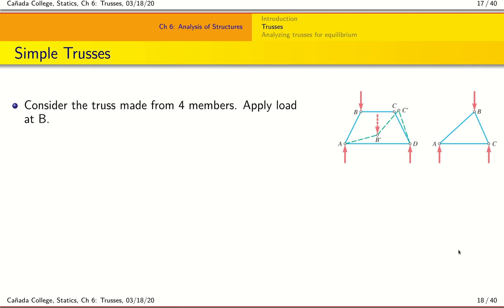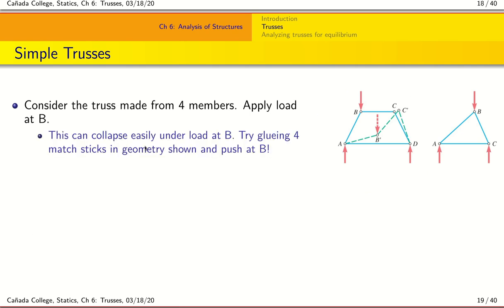Let's now focus on something called the simple truss. Consider a thought experiment with a structure consisting of four members AB, BC, CD, and AD, with a load applied at B. It turns out that in a structure like this, applying a load at B can easily collapse it — you can try this at home by taking four matchsticks, gluing them together in this trapezoid shape, and pushing down at B; the structure can break quite easily.